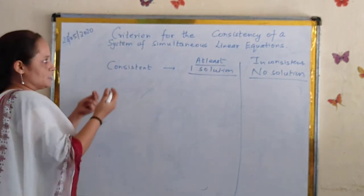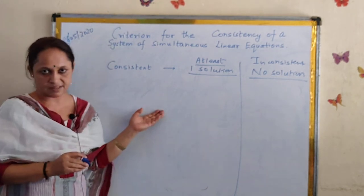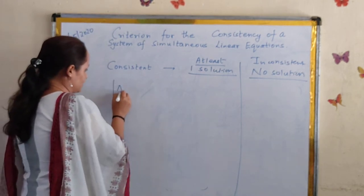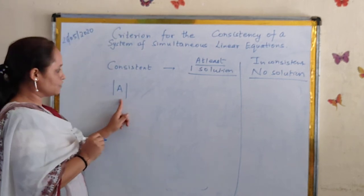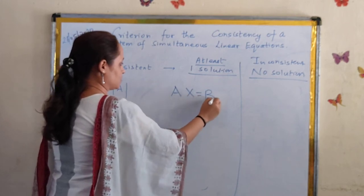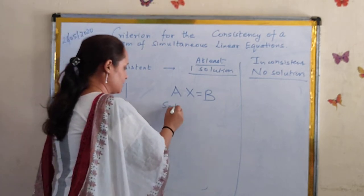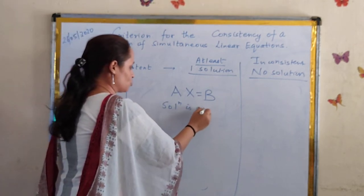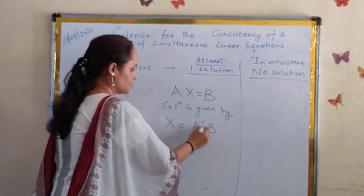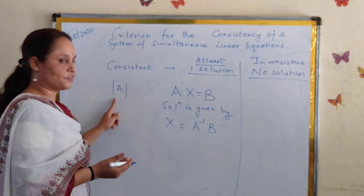Now, what is the criteria for the consistency of a system of simultaneous linear equations? That's what we are going to learn in this video. First of all, we have to find the determinant of A. Remember, in the last video we established that a system of linear equations can be written in matrix form as AX = B, and the solution is given by X = A inverse B.